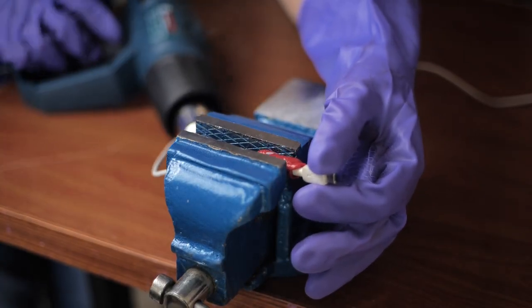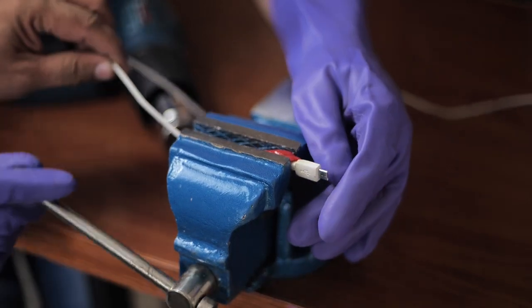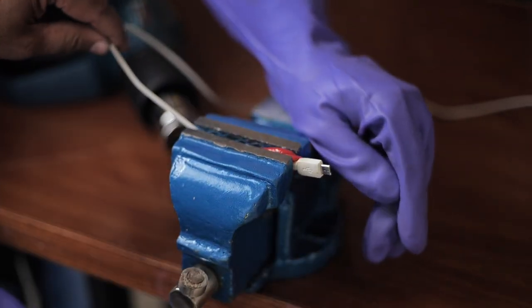Now you need to place the wire on the vise. Make sure that the USB part of the charger is not in the vise and is sticking out, while the cable is held tightly like we have placed it here.